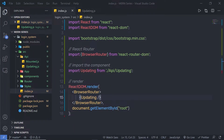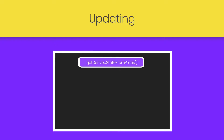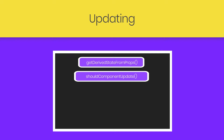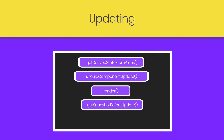In this lecture, we are going to talk about the getSnapshotBeforeUpdate React lifecycle hook. As you know, we are learning the update phase of the React component. In the update phase, React will first call getDerivedStateFromProps, then it will call shouldComponentUpdate, then React will call the render method. After that, React will call getSnapshotBeforeUpdate, and at the end, React will call componentDidMount.